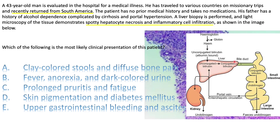When there is a rise in conjugated bilirubin due to some sort of obstruction, bilirubin will escape to the blood. Because it's water soluble, it can travel down to the kidney and give the urine a dark color. Because conjugated bilirubin cannot make it to the intestine, it cannot give stool its brown color — so stool will be pale or clay colored. So whenever there is a rise in conjugated bilirubin, both dark urine and pale stool will be present.